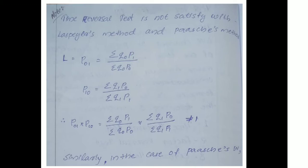Laspeyre's method and Paasche's method satisfy the time reversal test. In Laspeyre's method, P01 equals summation Q0·P1 divided by summation Q0·P0, multiplied by 100. And P10 equals summation Q1·P0 divided by summation Q1·P1.